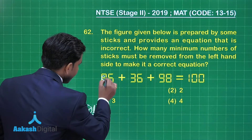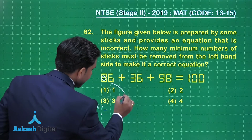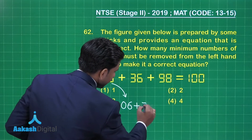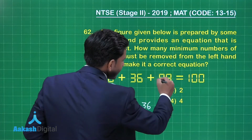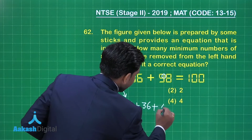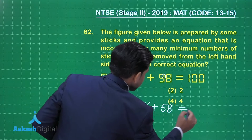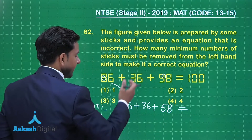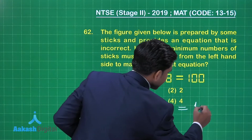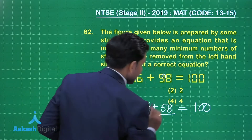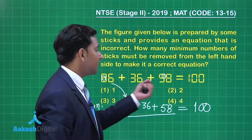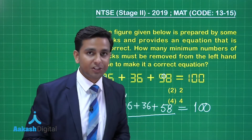If I remove one stick, 86 can be written as 06, and from the number 98, if I remove one stick, we obtain 58. So when we add 6, 36, and 58, we get the sum as 100. That means we have to remove two sticks from the left-hand side of the given expression.